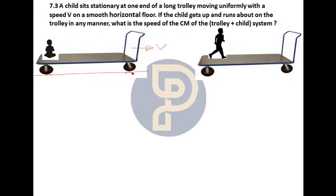Now, the child gets up and starts running in any manner — let's say in the forward direction. If the child runs in any manner on the trolley, we need to find the velocity of the center of mass. The child plus trolley together form one system. This is our system: child plus trolley.